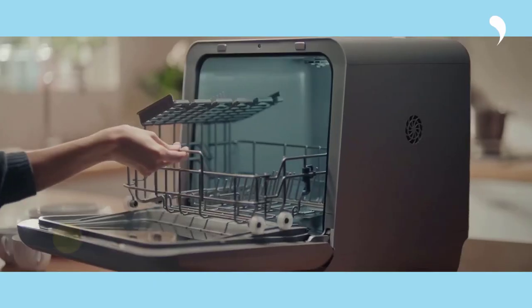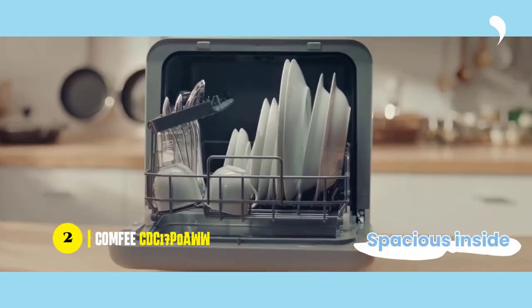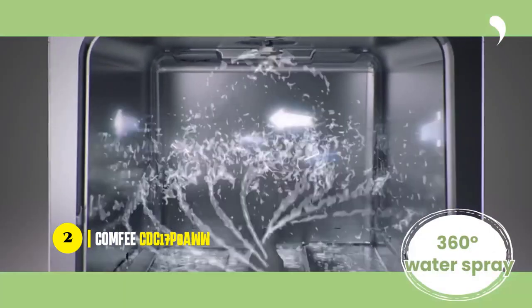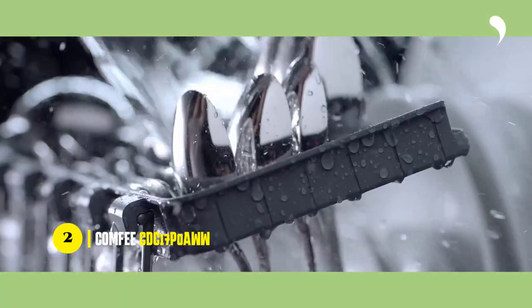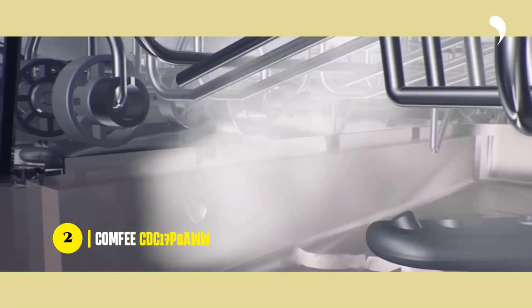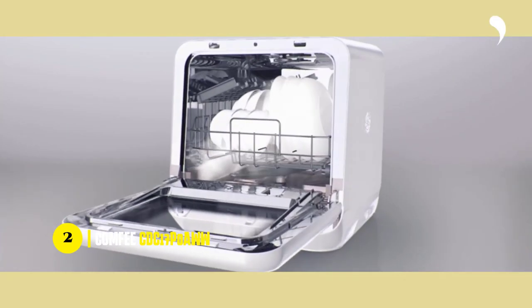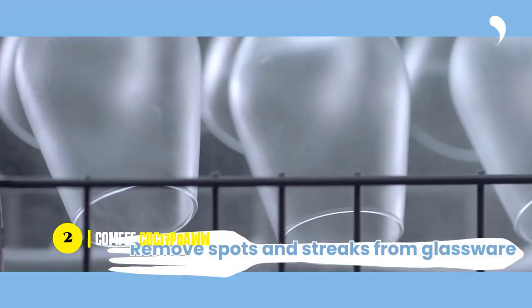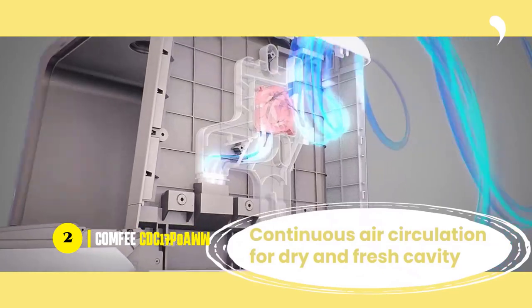Third on our list is the Comfy CDC17P0AWW Countertop Dishwasher. The dishwasher is a great addition to any small kitchen or apartment. With its ultra-compact design, it fits in small spaces while still having the capacity to wash 30-plus items at a time. This mini dishwasher is also versatile, as it can be used with or without a tap water connection.